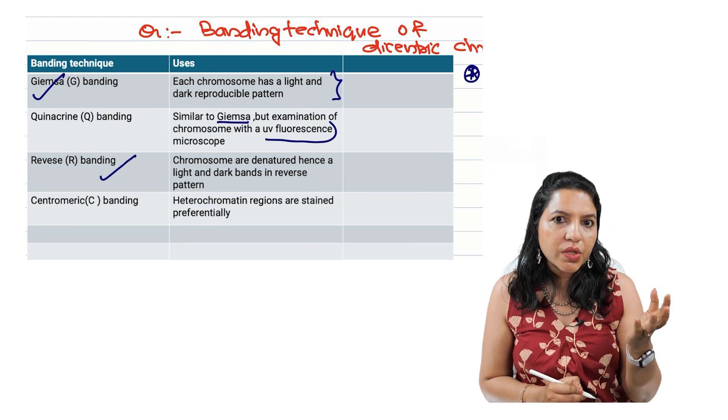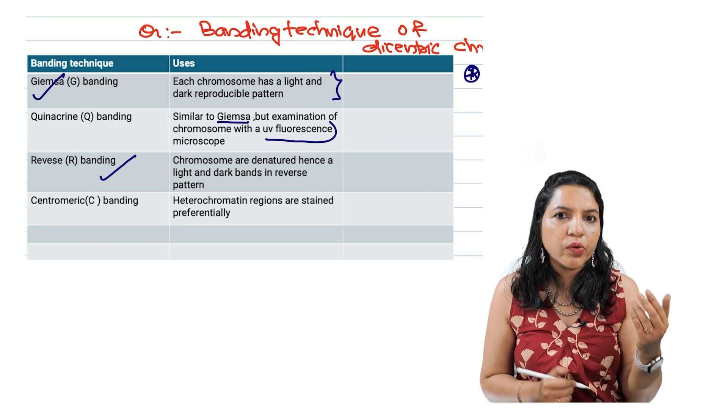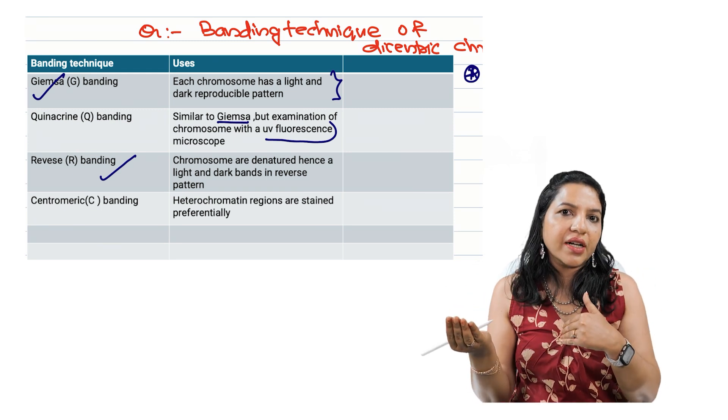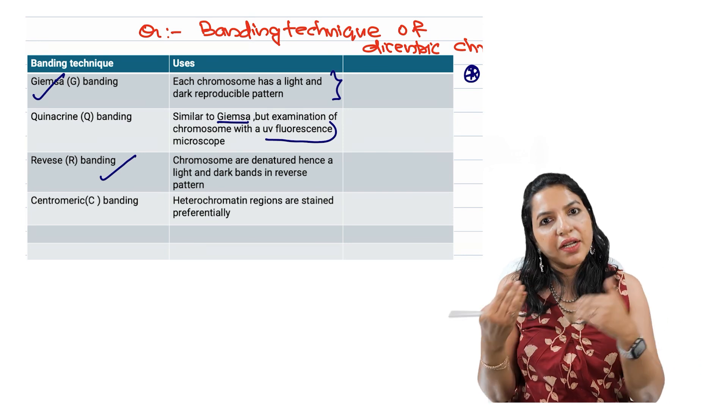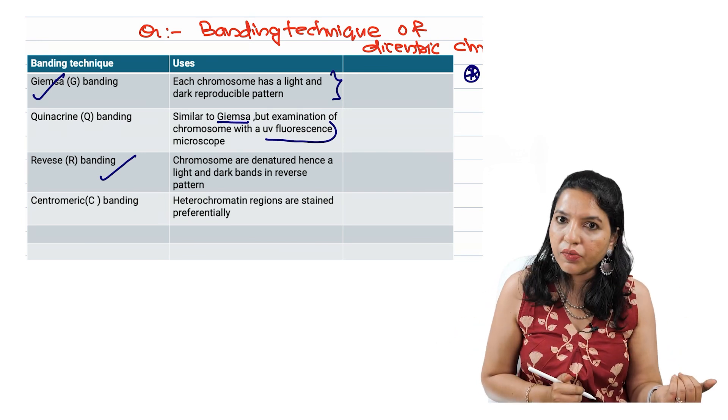Then another is reverse banding. Reverse banding means we denature the chromosome and whatever is dark in the conventional or Giemsa staining will be white here and white in the Giemsa staining will be dark here. So that is called as reverse banding.